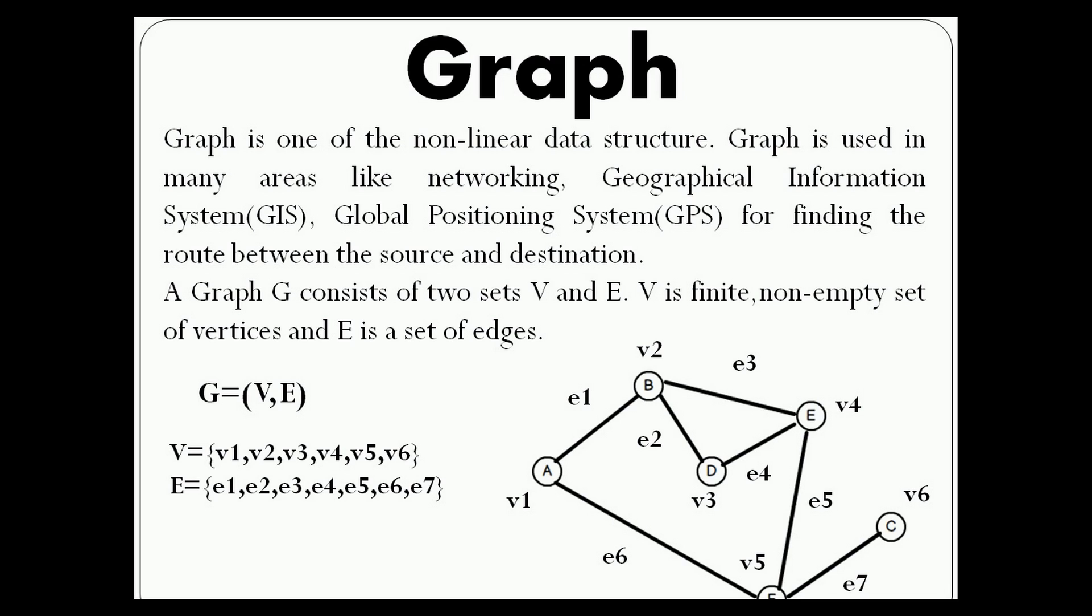A graph G consists of two sets V and E. V is a finite non-empty set of vertices and E is a set of edges.